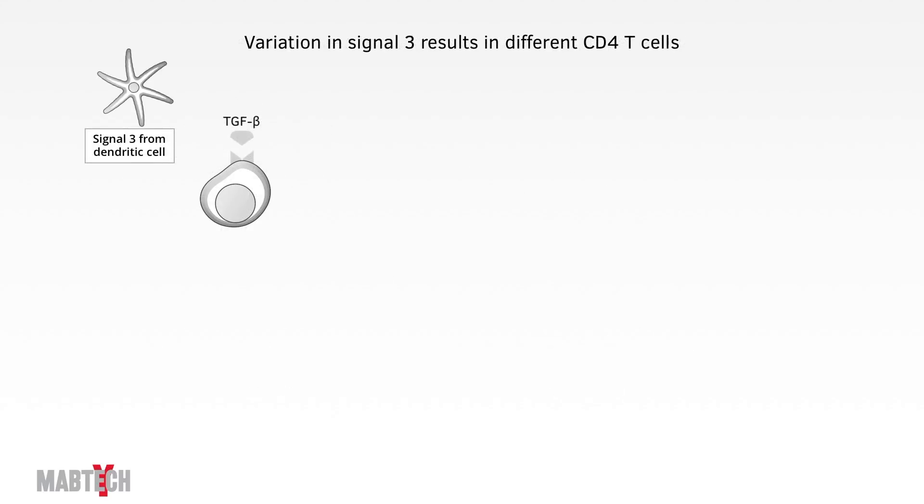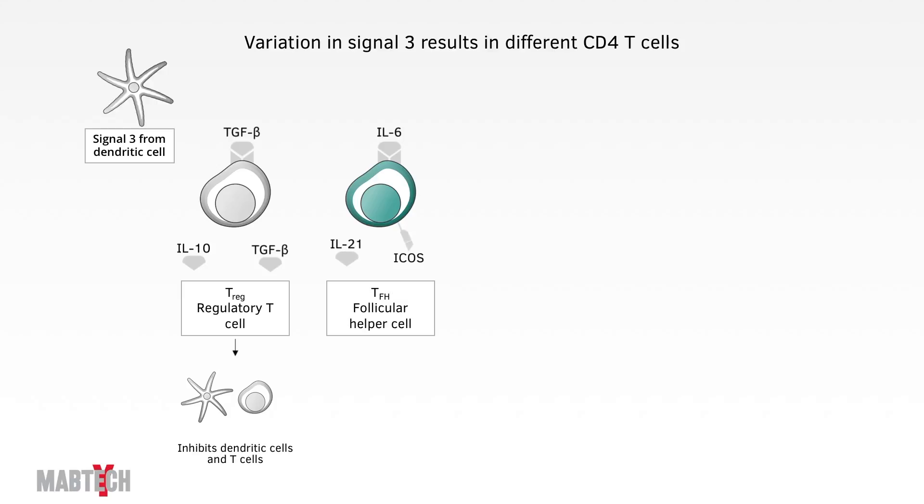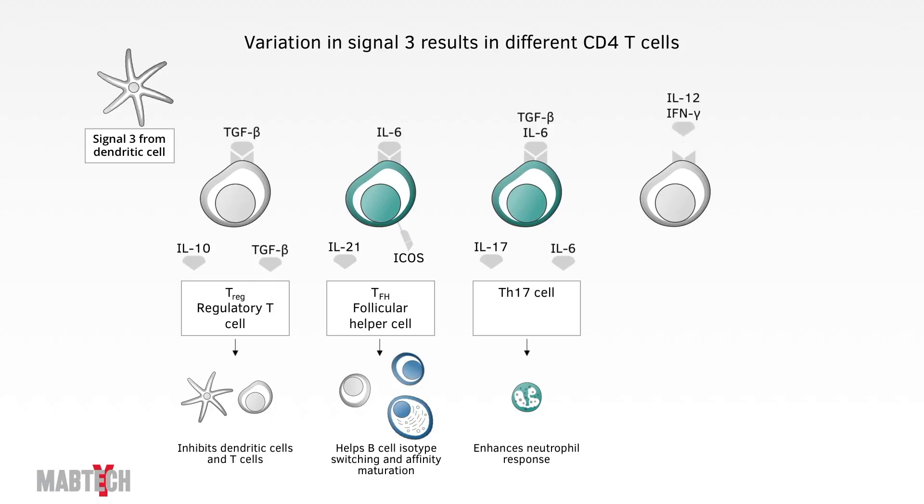If the antigen-presenting dendritic cell provides signal 3 in the form of TGF-beta, the CD4-positive T-cell becomes a regulatory T-cell that inhibits other T-cells and dendritic cells. If the dendritic cell produces only IL-6, the T-cell differentiates into T-follicular helper cells that help B-cell's isotype switch and affinity maturation. However, a combination of TGF-beta and IL-6 results in a TH-17 cell that helps neutrophils. IL-12 together with interferon-gamma gives you a TH-1 cell that makes macrophages better at engulfing pathogens. IL-4 results in TH-2 cells that activate cells often involved in allergy like mast cells and eosinophils.